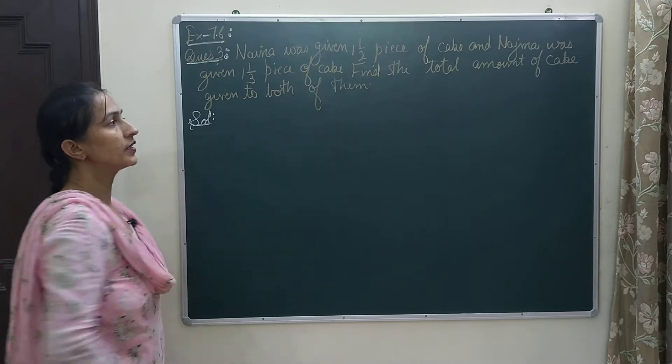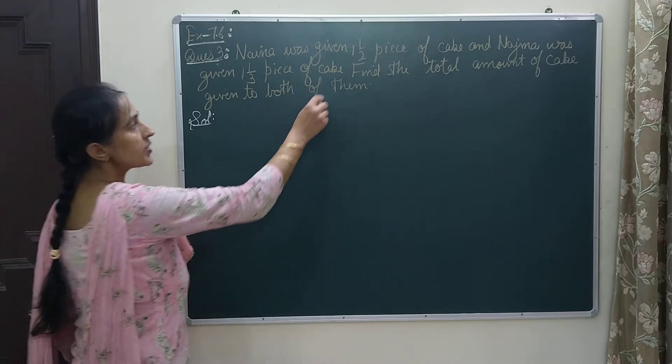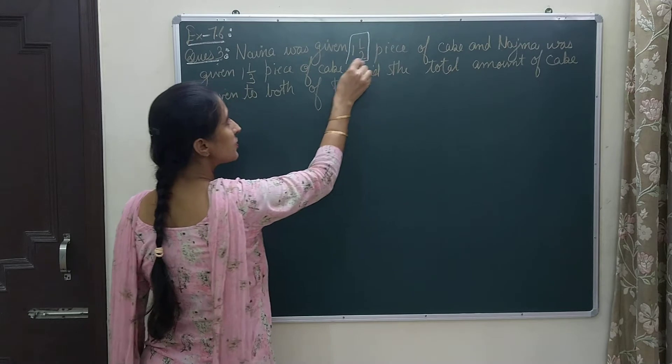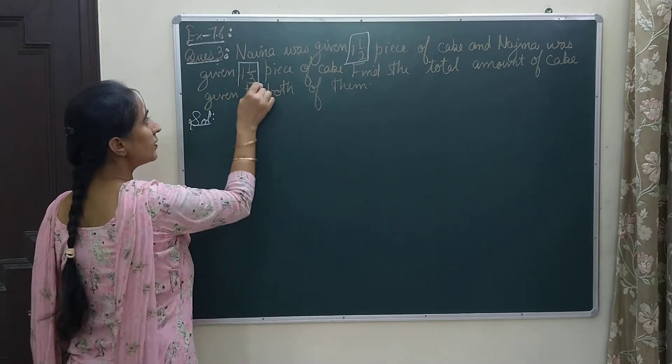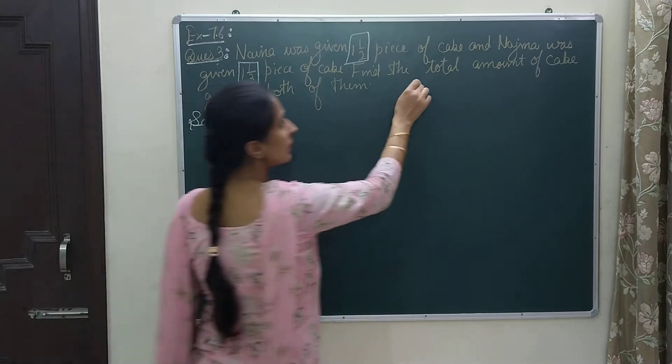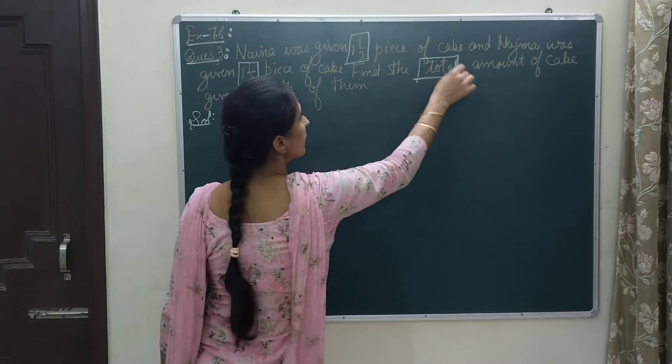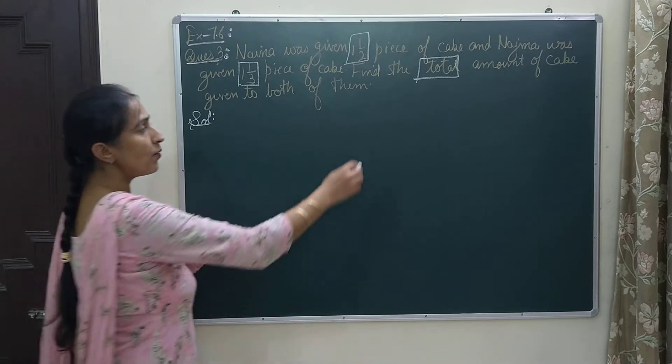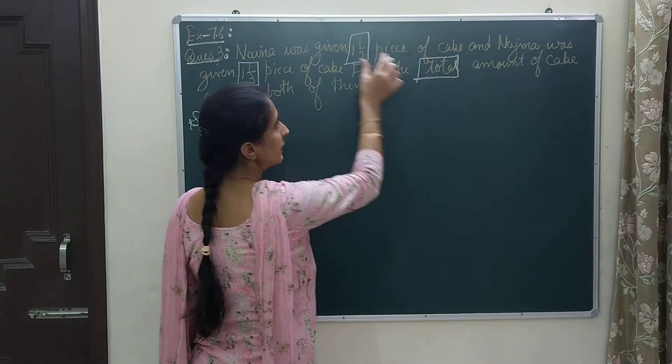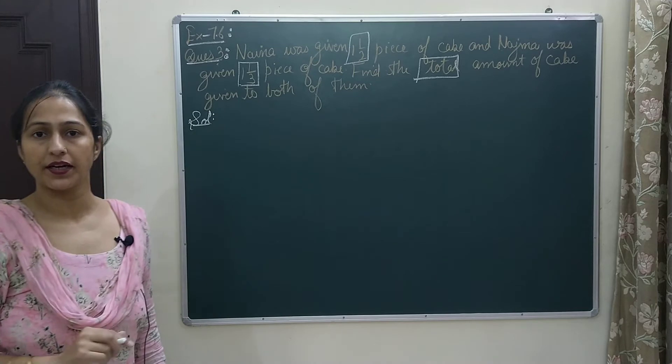Here two girls are there, Najma and Naina, and both are given some piece of cake and that fraction is given to us: 1 and 1/2 and 1 and 1/3. Find the total amount of cake given to both of them. Here we need to find how much is the total cake that is given to both the girls, Naina and Najma.